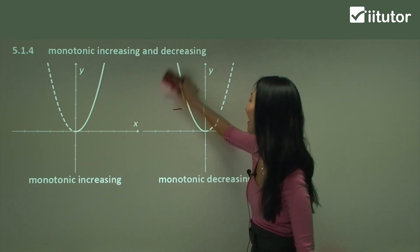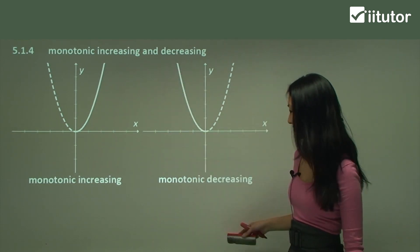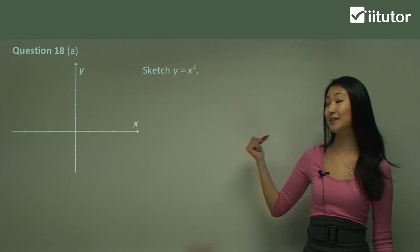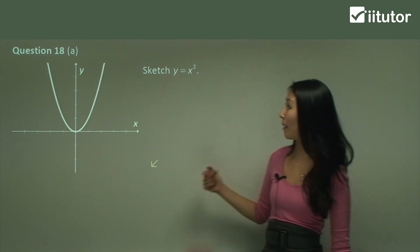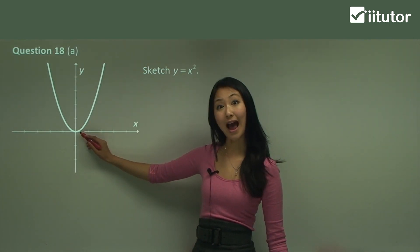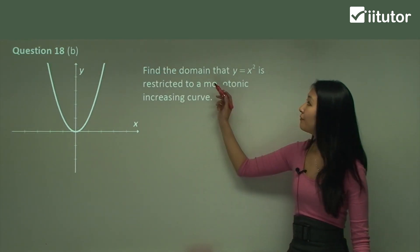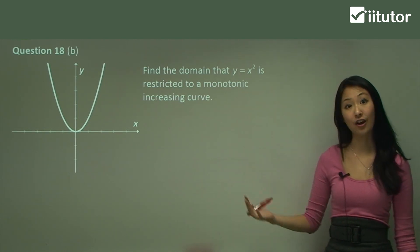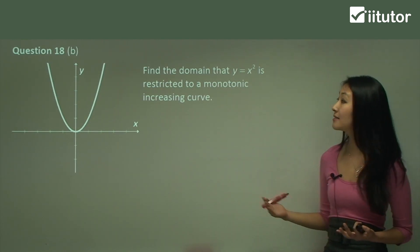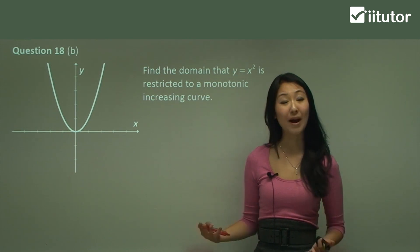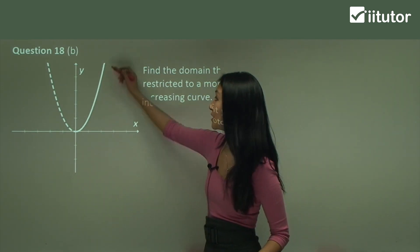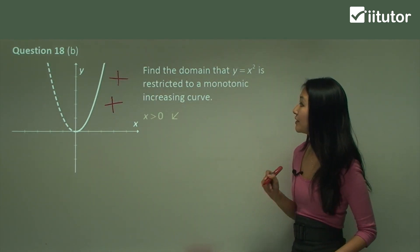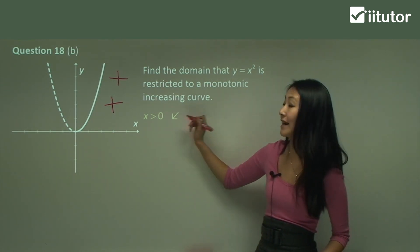Let's see how this is used in the questions. In question 18, we've been asked to sketch y equals x squared — this is just our basic parabola that goes through (0, 0) as its vertex. We need to find the domain that y equals x squared is restricted to a monotonic increasing curve. It's asking us where this part of the curve is always increasing, and it's going to be this portion here, because the gradient is always positive. So the domain should be x is greater than 0.